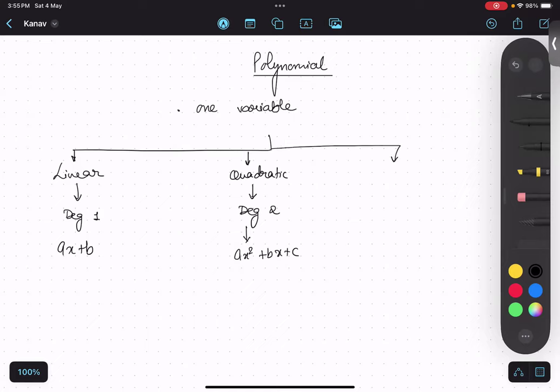And then after that, the third one is cubic. That is, degree is 3. So the general form will be ax cubed plus bx squared plus cx plus d. Okay.